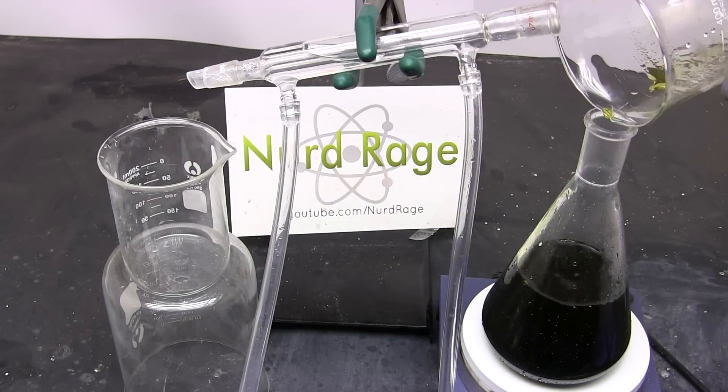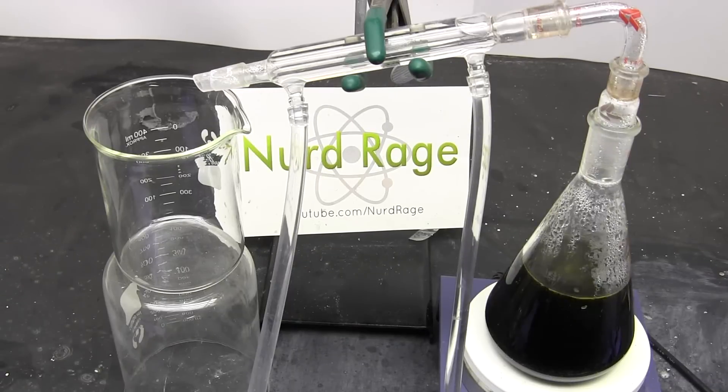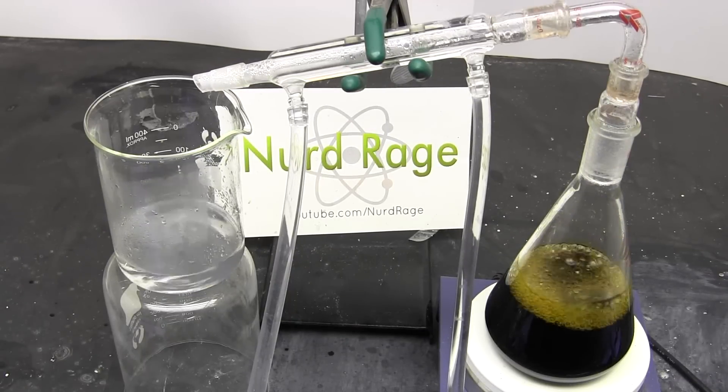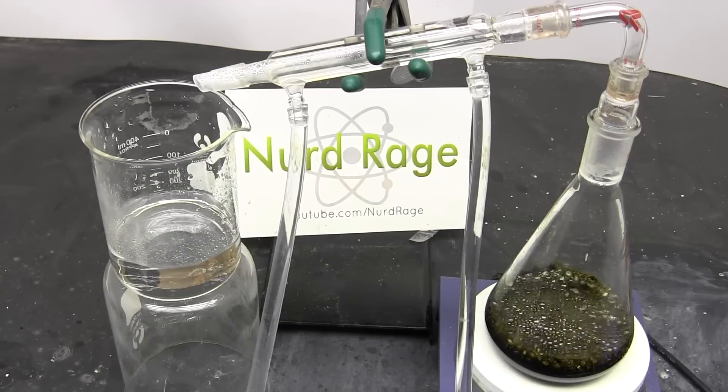Now I'm getting the filtrate and distilling off the water and hydrochloric acid. This step is actually optional but I'm doing it because I wanted to weigh how much ferric and copper chlorides I had. You don't actually need to do this part and can go right to adding copper.